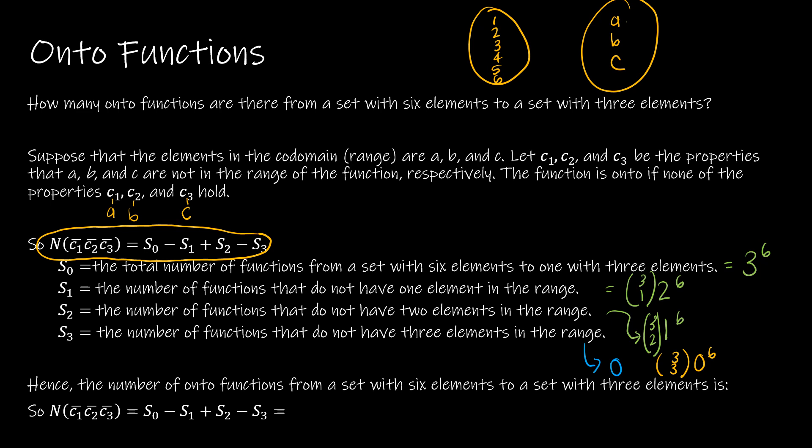So to find our solution, we're going to take 3⁶ minus (3 choose 1), which is 3, times 2⁶, plus (3 choose 2), which is 3, times 1⁶, which is one. And that gives us 729 minus 192 plus 3, or 540 onto functions.